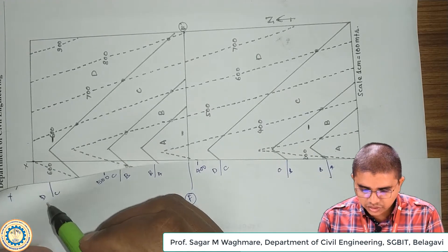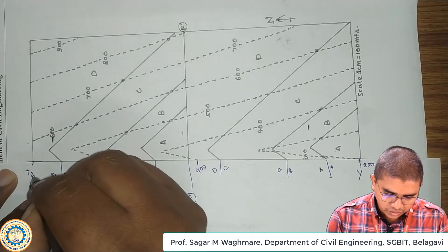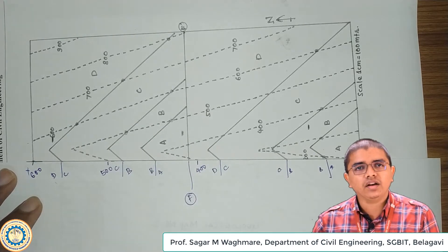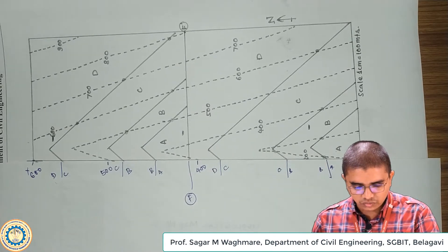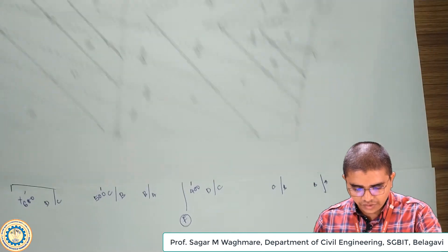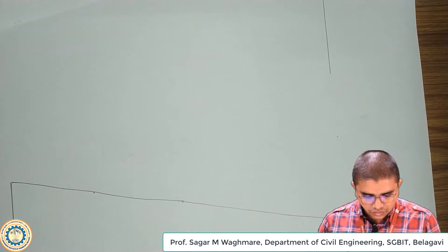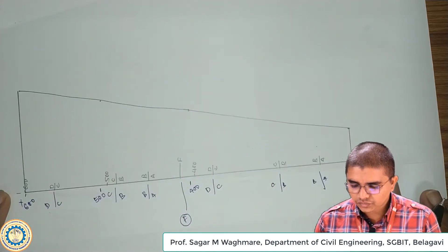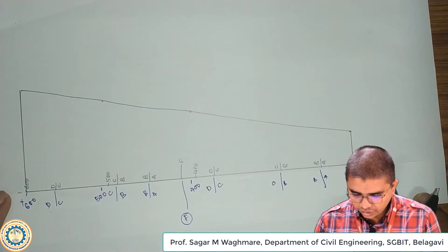At this location, if you observe, there is a control line and the value of that is 600. I have noted down all these values. Once I have noted down these values I will be drawing a profile out of it. For convenience I have already drawn the profile and kept it ready for plotting.